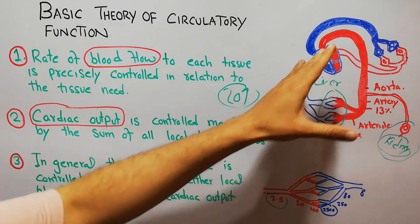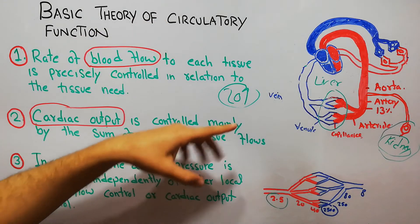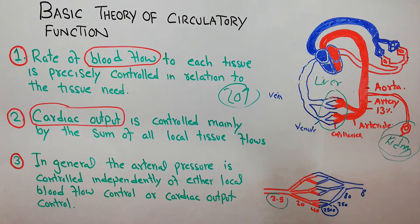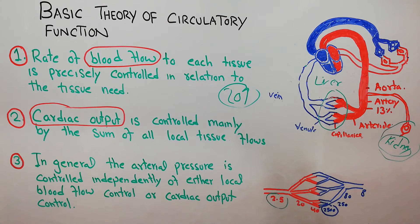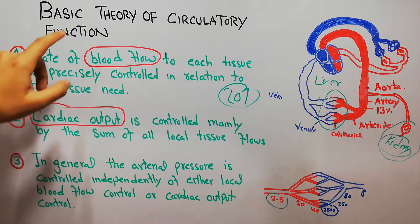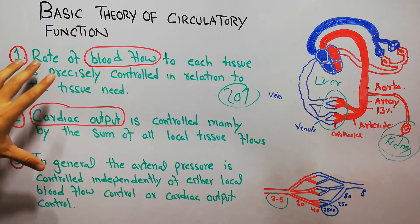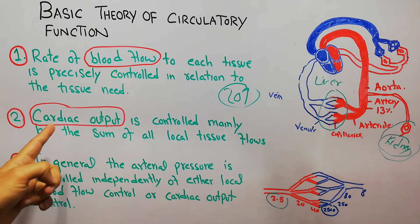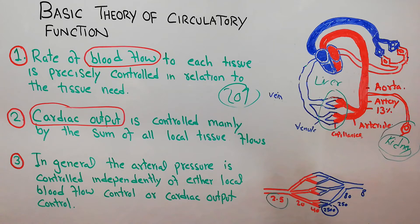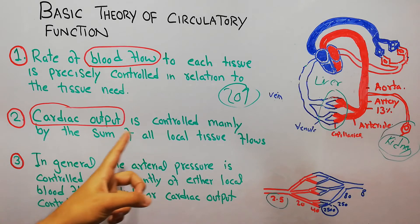So if blood flow increases in even one tissue it will lead to an increase in cardiac output, and similarly if blood flow decreases in one tissue it will lead to a decrease in cardiac output. In summary: the first point is about blood flow and the second point is about cardiac output.